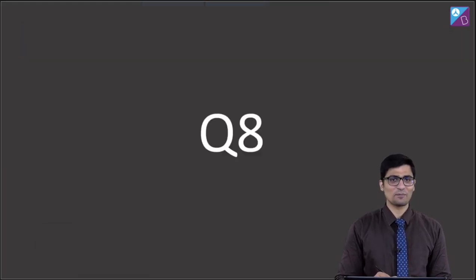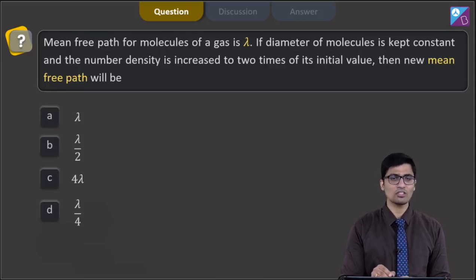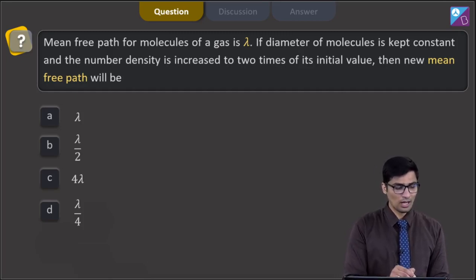Now, let us move to the next question. This is question number 8. This question says, the mean free path for molecules of a gas is lambda. If diameter of molecules is kept constant and the number density is increased to 2 times of its initial value, then new mean free path will be. The 4 options are lambda, lambda by 2, 4 lambda or lambda by 4.